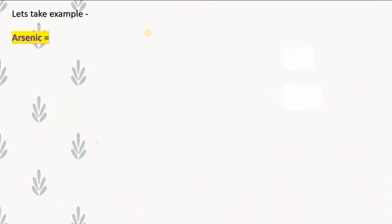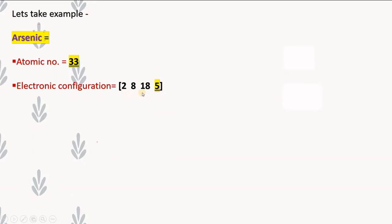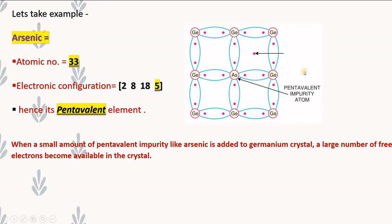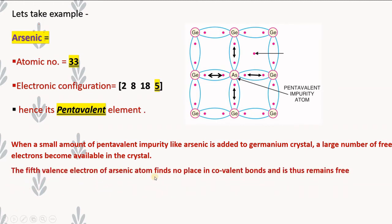Arsenic has atomic number 33. Its electronic configuration is: first orbit — 2 electrons, second orbit — 8 electrons, third orbit — 18 electrons, and the valence orbit — 5 valence electrons. Hence arsenic is a pentavalent element. When a small amount of pentavalent impurity like arsenic is added to a germanium crystal, a large number of free electrons become available. In the diagram, arsenic forms four covalent bonds with neighboring germanium atoms, but the fifth valence electron finds no place in a covalent bond and thus remains free.